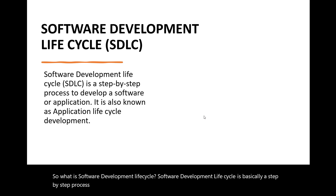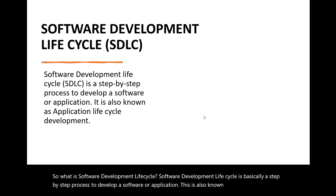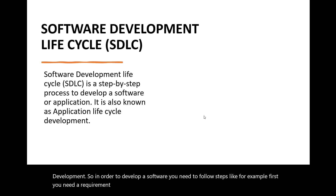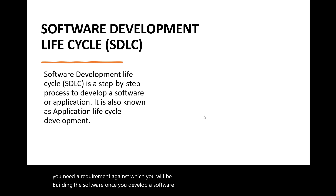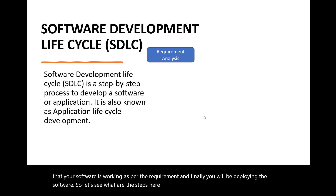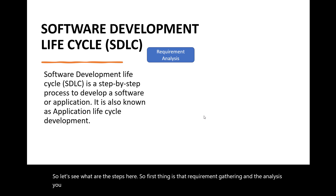So what is software development lifecycle? Software development lifecycle is basically a step-by-step process to develop a software or application. This is also known as application lifecycle development. In order to develop a software you need to follow steps — first you need a requirement, then you develop the software, then you test it to ensure it's working as per the requirement, and finally you deploy it.